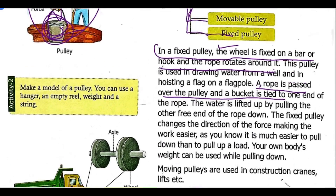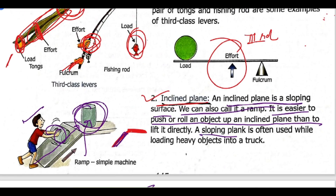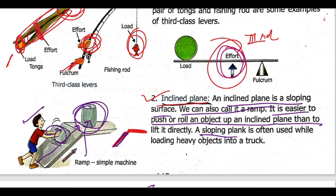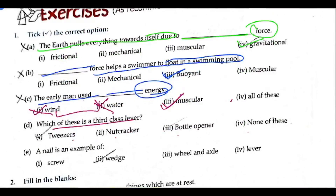For third class lever, you have the fulcrum at one end, load on the other side, and effort in between. So the answer is tweezers — tweezers are small in size, the joint part is the fulcrum, effort is applied on one side, and load is on the other.